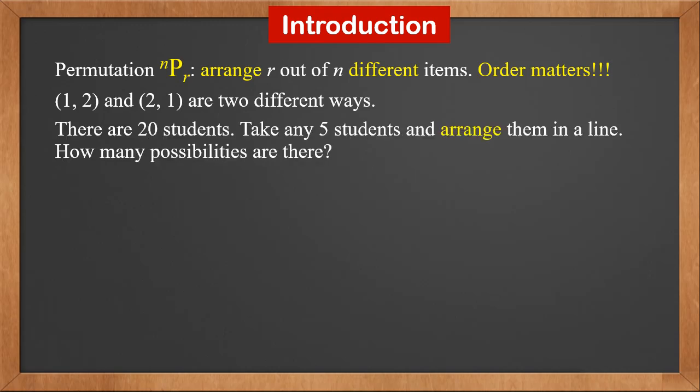Let's take a look at a couple of examples. There are 20 students. Take any five students and arrange them in a line. How many possibilities are there? We see the word arrange. It means the order of those five students matters. So we must use permutation here, and the answer is 20P5.